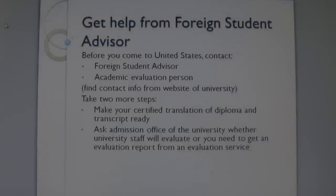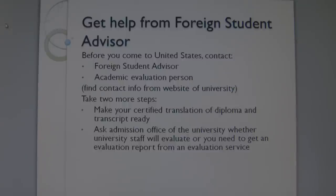Get in touch with your International Student Advisor before you come to the United States. You may find your advisor's name at the website of the university or college. Also ask for the name of the person for academic evaluation and contact them as well. Get a certified translation of your diploma and transcript, and ask whether the university or college will make the evaluation by its own staff or will ask you to get an evaluation report from a foreign credential evaluation service.